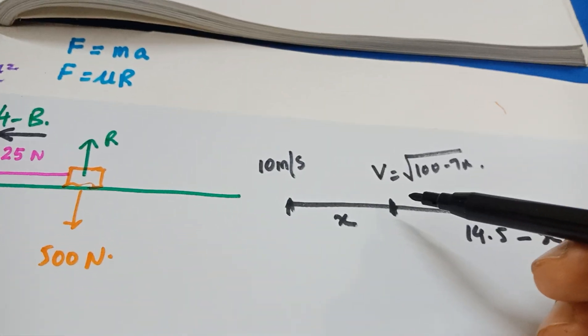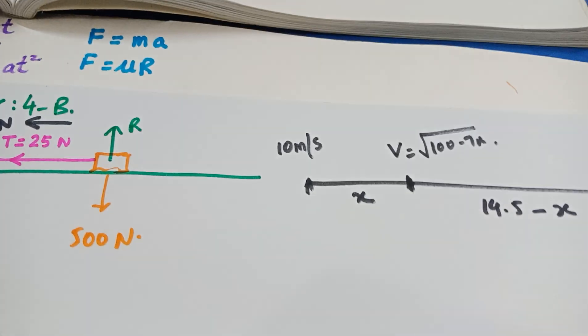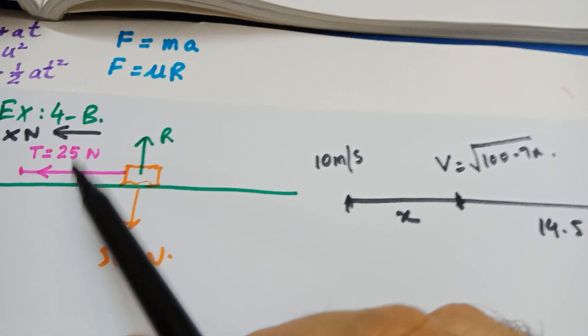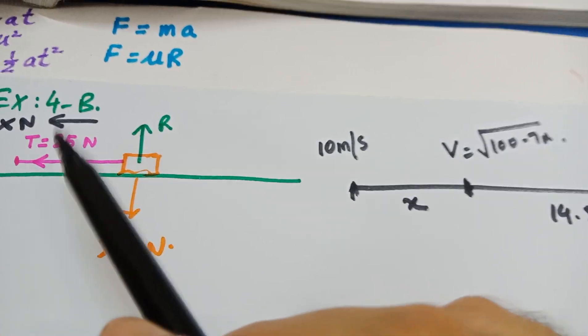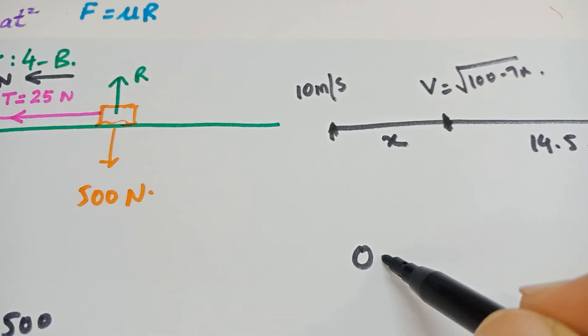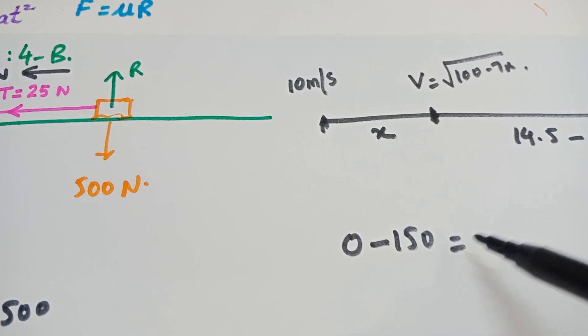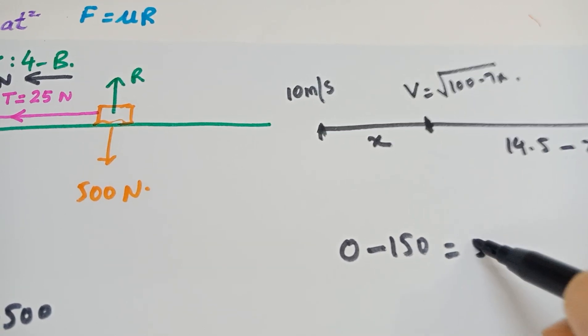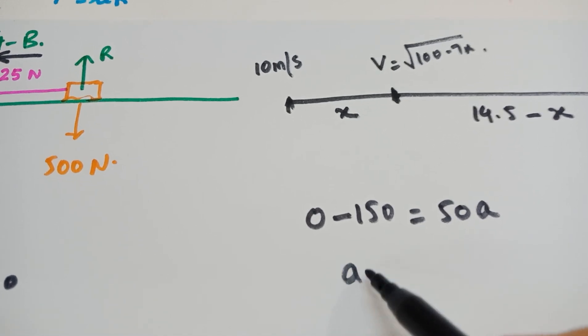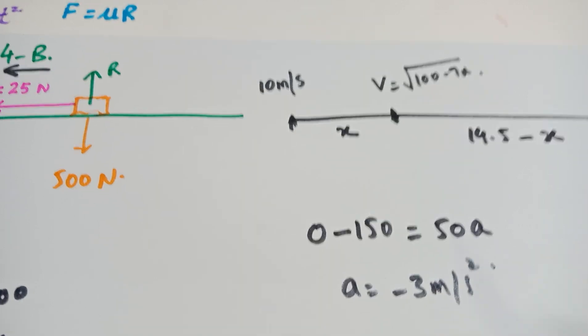Now, the string has broken. So, guys, you will have to re-evaluate the acceleration, the deceleration now. The frictional force is the same, but this force is no more there. So let us re-evaluate the acceleration. Now, there is no forward force, but there is the frictional force, which is minus 150. Equal to, the mass is 50, and we have to find the acceleration. So this acceleration is going to be minus 3 meter per second squared.